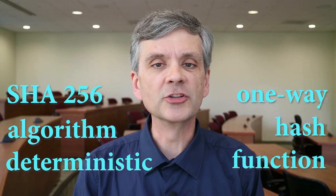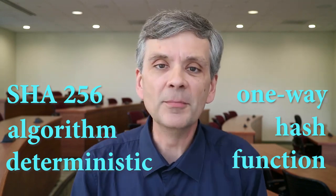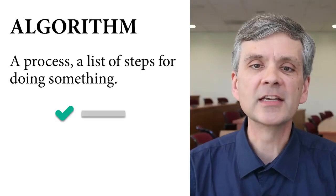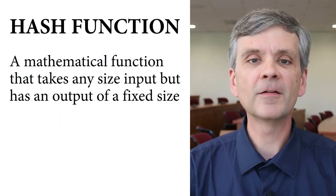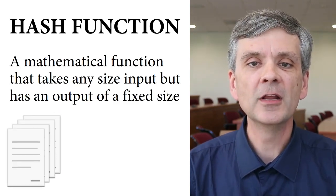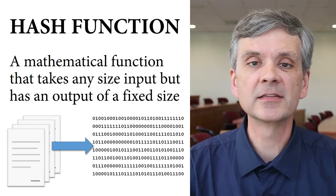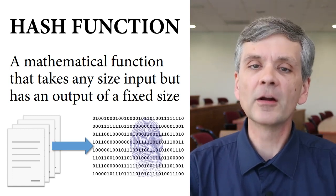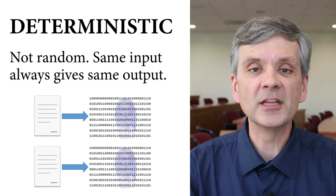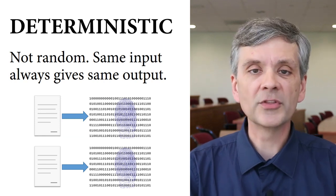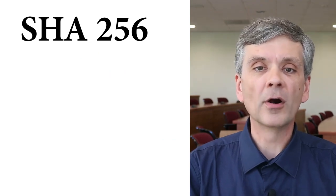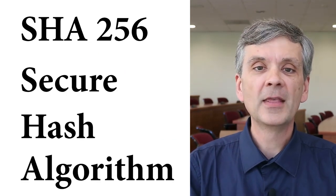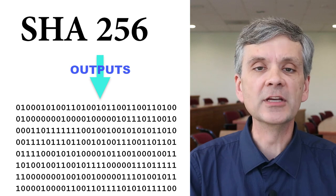The SHA-256 algorithm is a deterministic one-way hash function. An algorithm is just a process or a list of steps for doing something. A hash function is a mathematical function that takes any size of input but has an output of a fixed size — you can think of it as a digital fingerprint for the file. It's deterministic, which means whenever you start with the same input, you always get the same output. SHA-256 stands for Secure Hash Algorithm, and it outputs 256 bits.